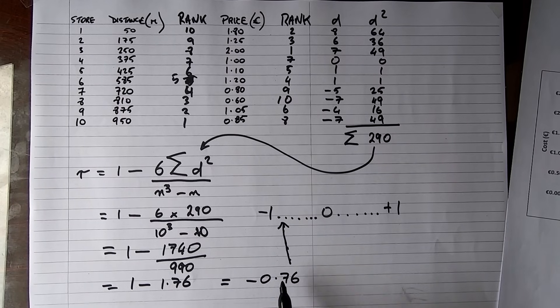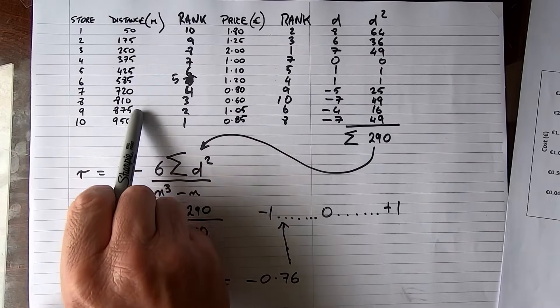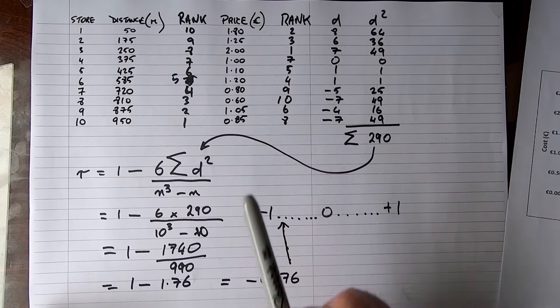So I have found a correlation between the distance from the city center and the price of a bottle of water, and that value is represented by minus 0.76, telling us that there's a strong correlation that as the distance increases from the city center, the price decreases.